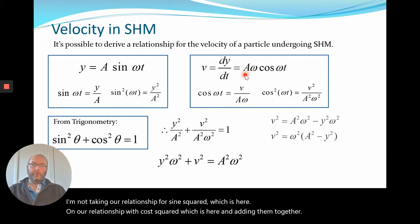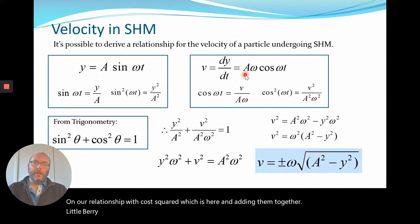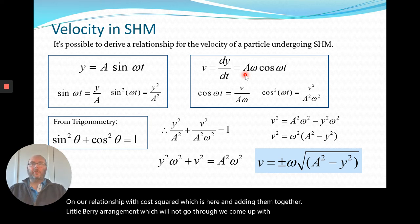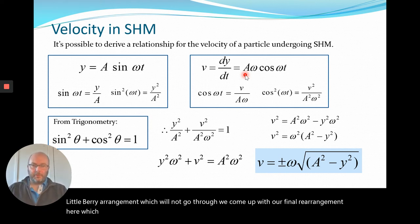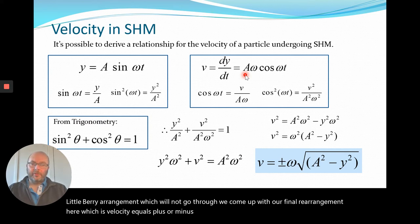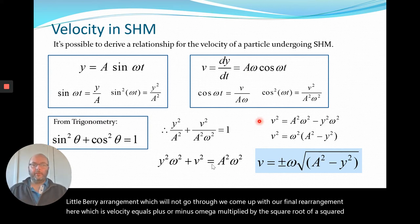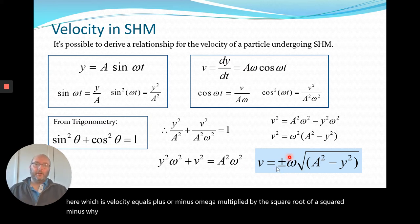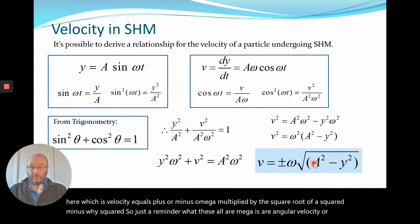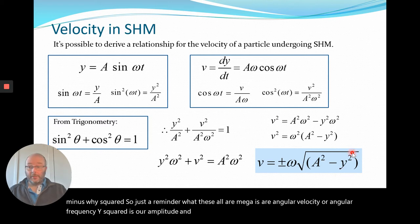After a little bit of rearrangement, we come up with our final relationship: velocity equals plus or minus ω multiplied by the square root of (A² minus y²). Just a reminder: ω is our angular velocity or angular frequency, A is our amplitude, and y is our displacement from the rest position.